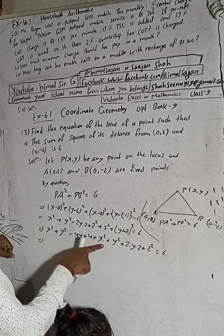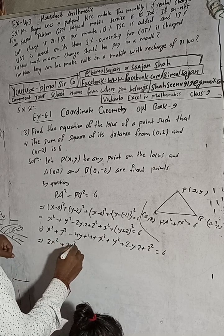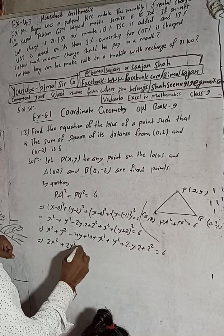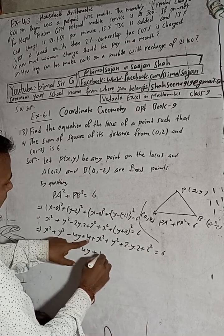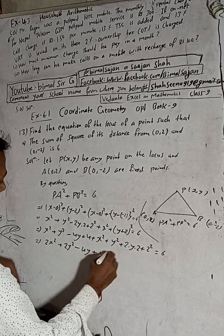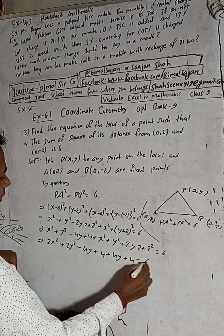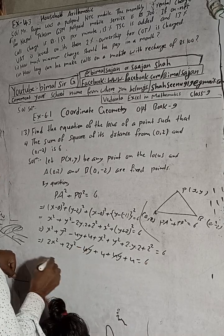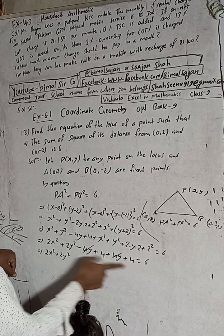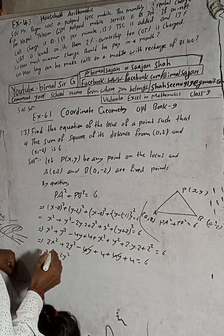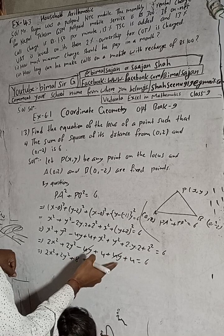Collecting like terms: there are two x² terms giving 2x². There are two y² terms giving 2y². The -4y and +4y cancel each other. We have 4 + 4 = 8. So: 2x² + 2y² + 8 = 6. Moving the 6 to the left side gives 2x² + 2y² + 8 - 6 = 0, so 2x² + 2y² + 2 = 0.